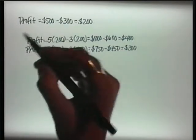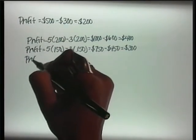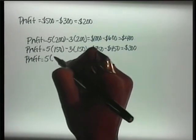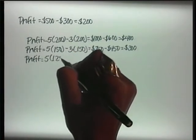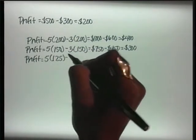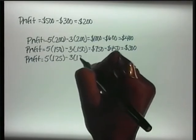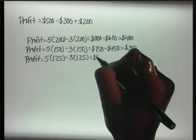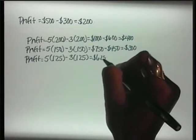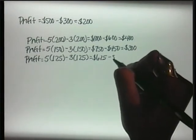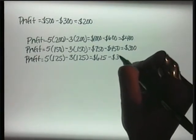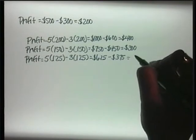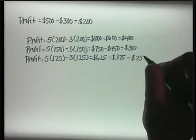That's still too much. Let's try $125. 5 times $125 minus 3 times $125 equals $625 minus $375, and that would equal $250.